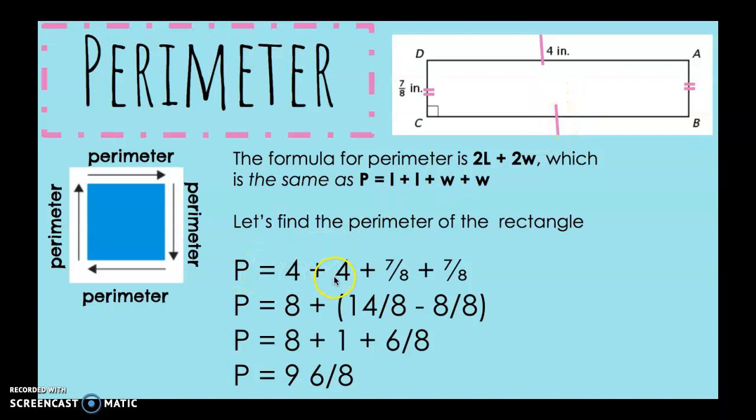So, perimeter equals 4 + 4 + 7/8 + 7/8. 4 + 4 is 8, and 7 + 7 is 14, so we get 14/8, but that's an improper fraction. How many times can 8 go into 14? Well, 8 times 1 is 8, so I know it can go in there one time, and 8 times 2 is 16, which is way too much.